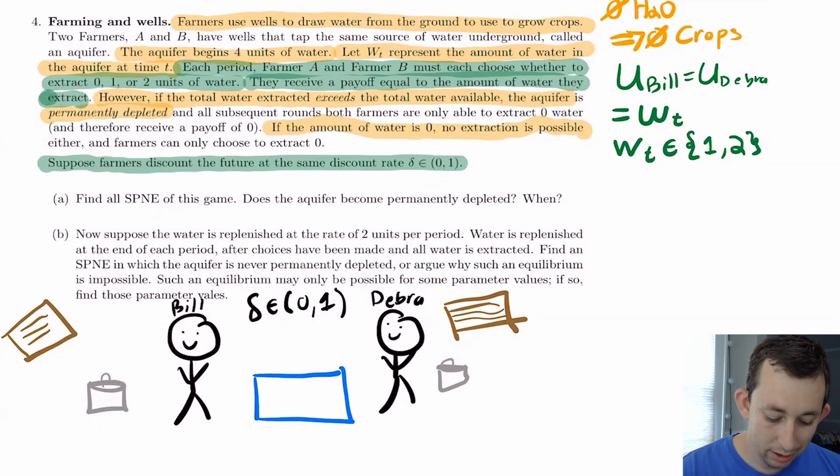So if I saw that in the question, I would probably think, okay, it might be the case that later on it's going to rain or something, and the aquifer can maybe be restored. But for now, that's not the case. So I'll just sort of table that sentence till later. We're also going to say that farmers Bill and Debra discount the future at the same discount rate, some delta between zero and one, which is pretty standard, it's just their level of patience.